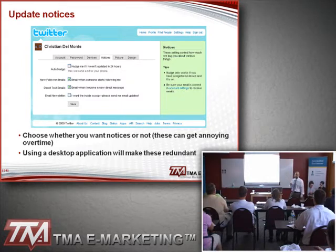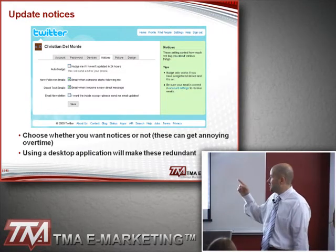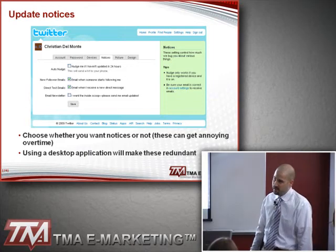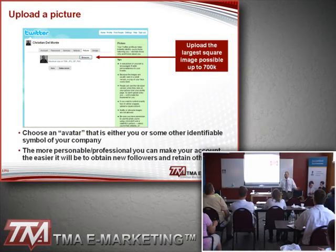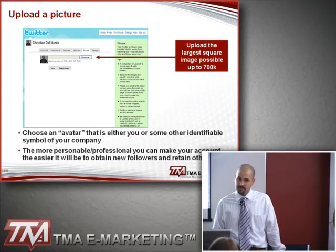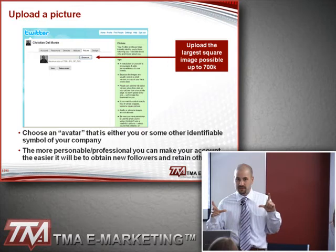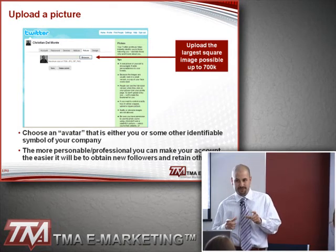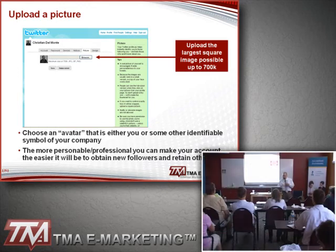There's also an option for direct message email notifications, which I'll explain in just a second. And lastly, there's an auto-nudge feature that sends a text to your phone if you haven't done anything in the last 24 hours — like we don't have a life, right? For uploading your picture, get the biggest square image you can, up to 700 kilobytes — it reduces to 48 by 48 pixels. The reason this matters is that desktop applications show a larger version, so if the image is lousy, it'll look lousy. The more professional you make it, the easier it is to gain and retain followers.